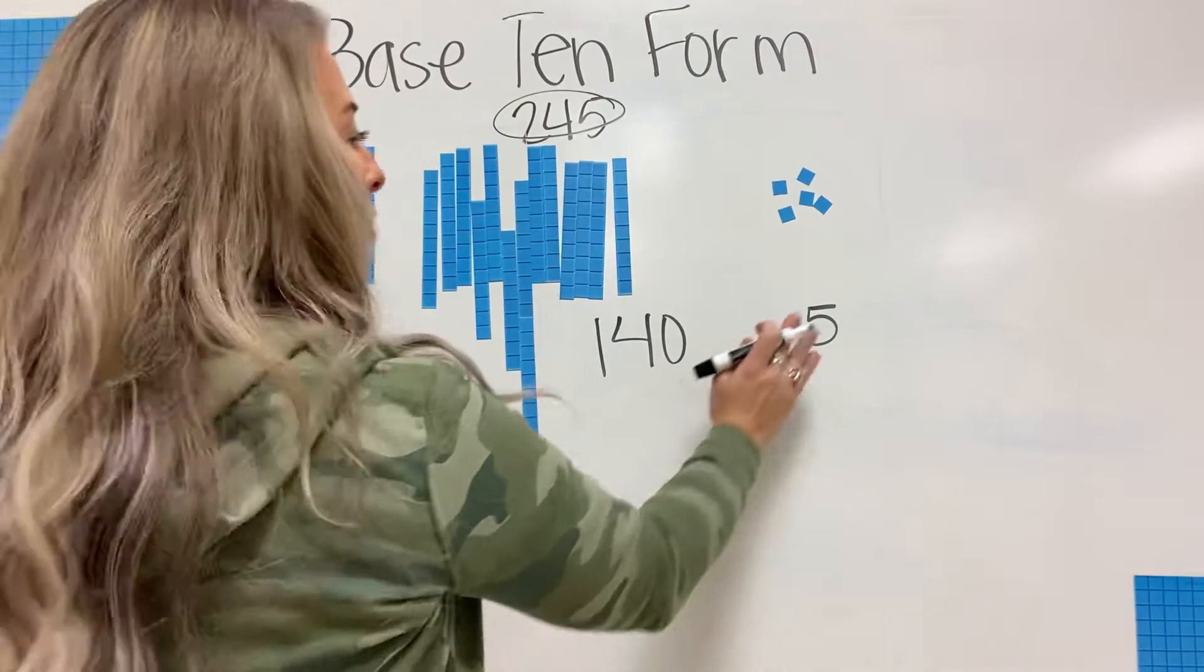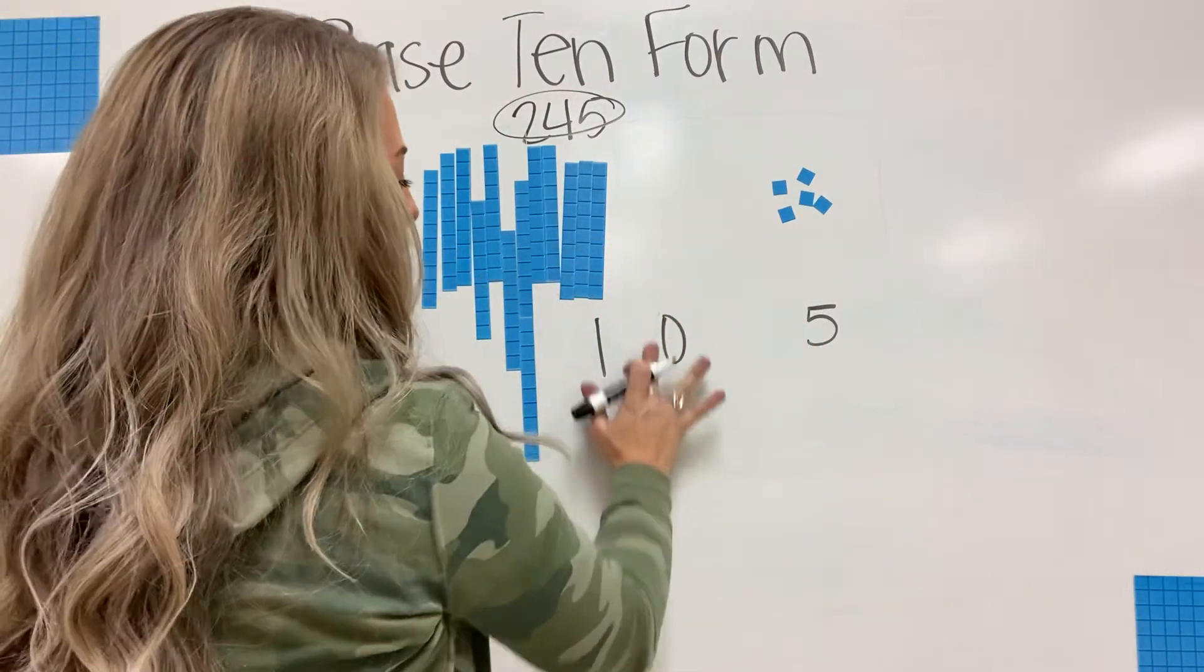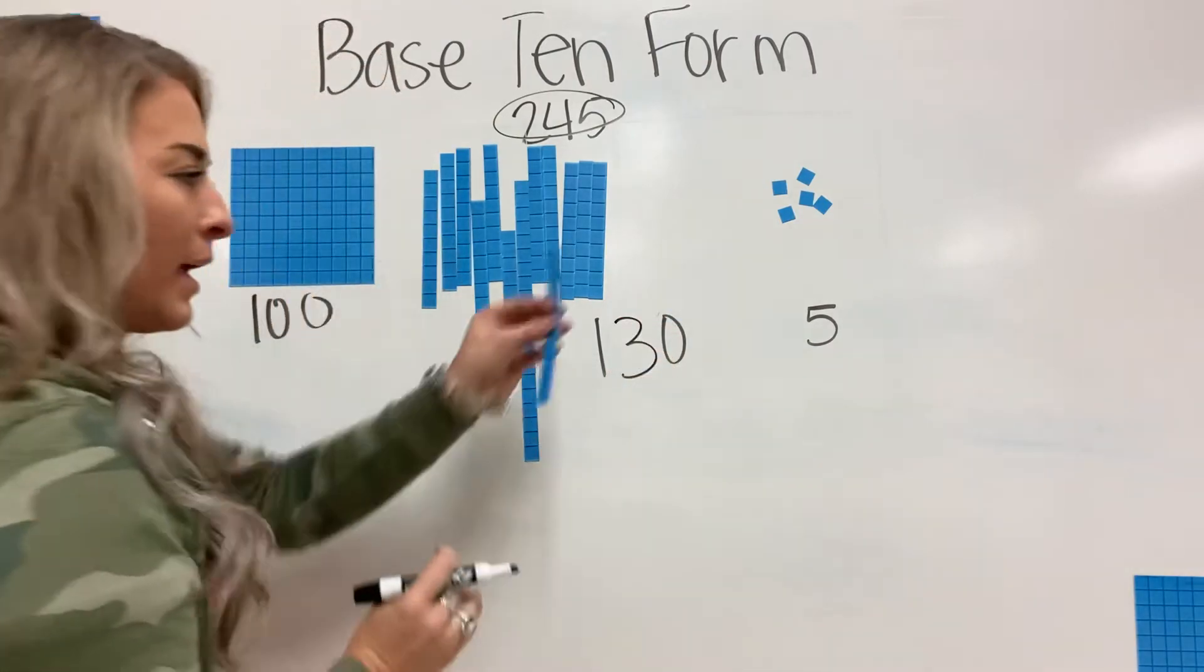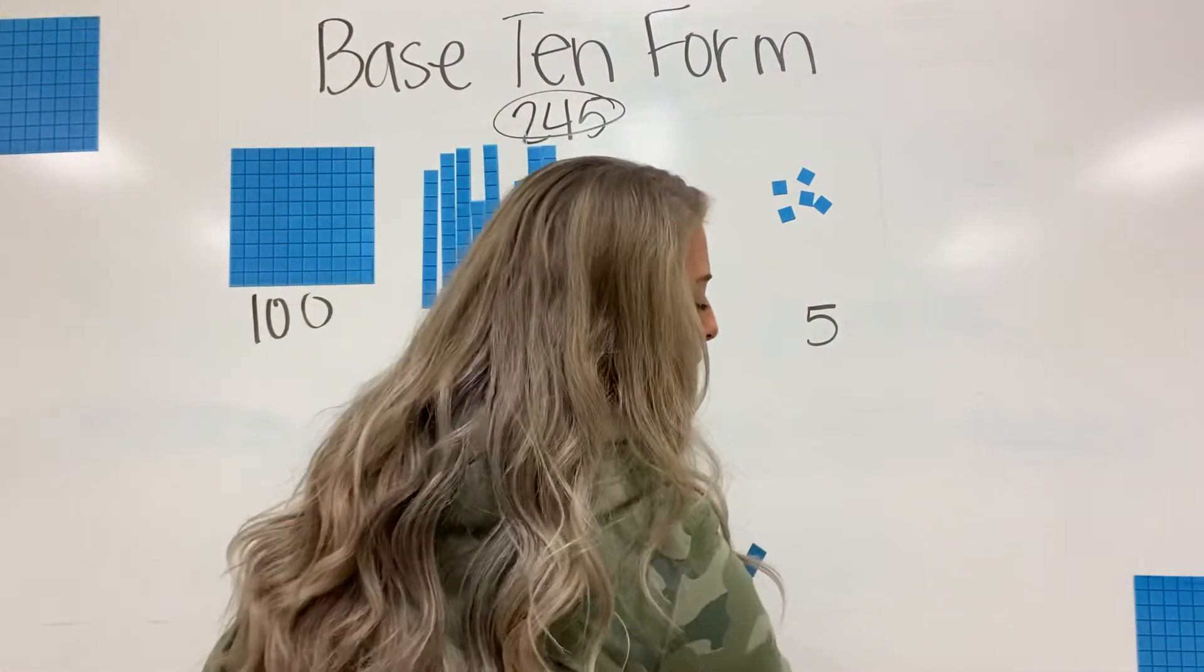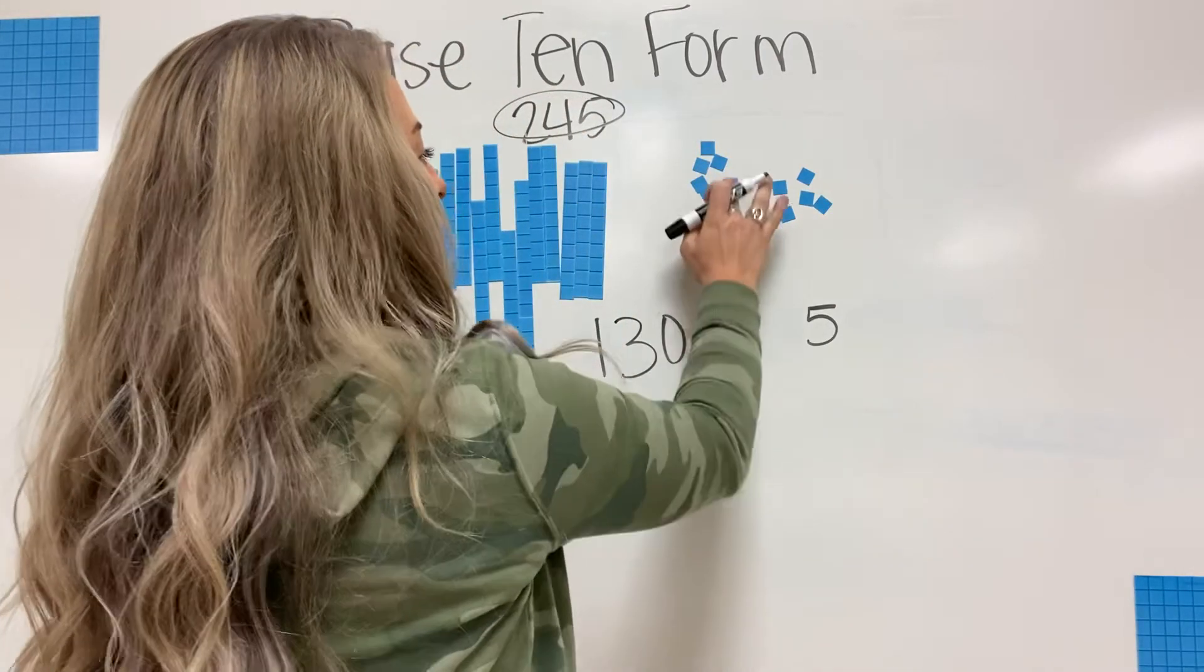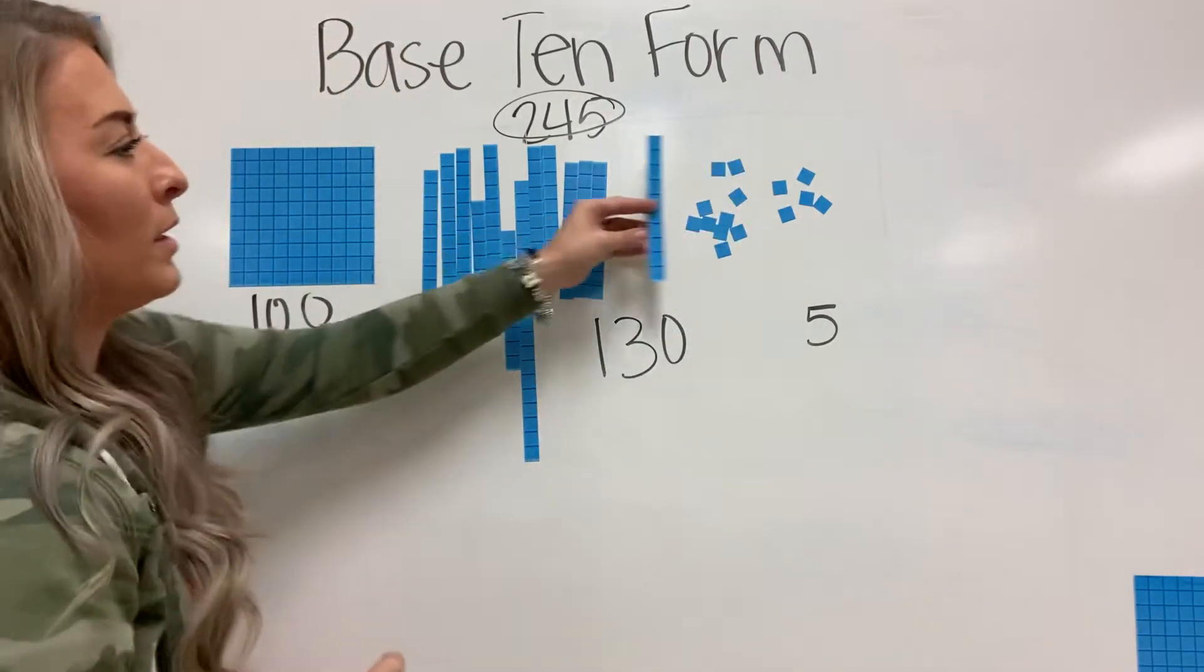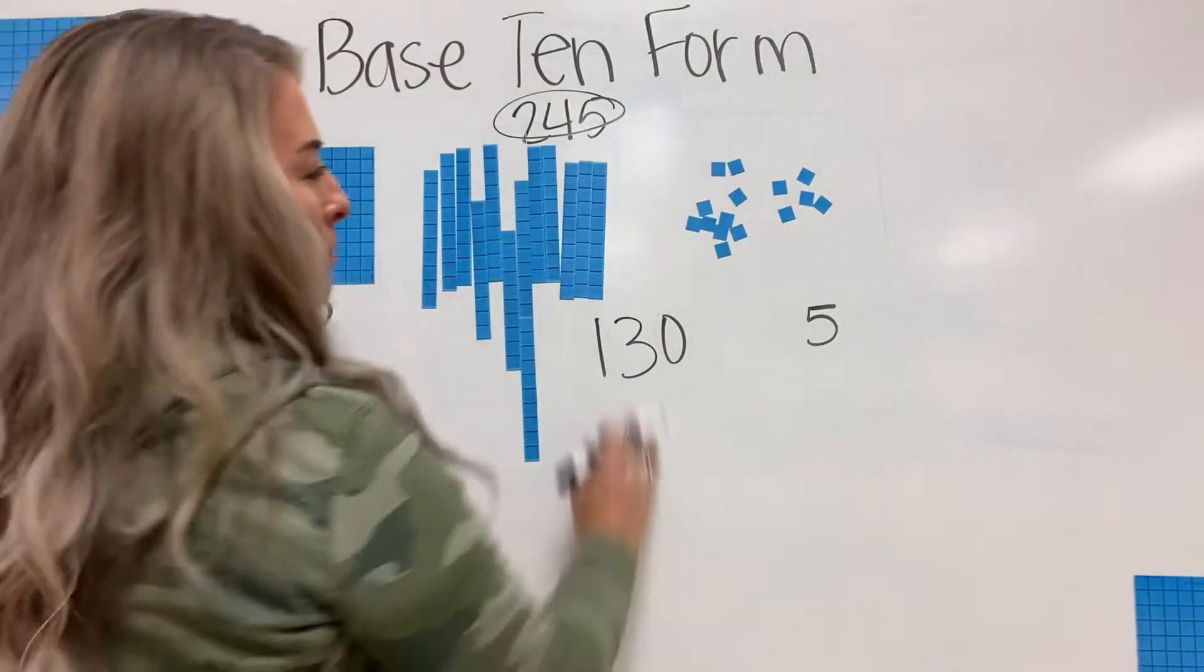You can also take one of these tens, which will leave me with 130, and I can trade it in for 10 ones, which I already counted, but I can count to show you: one, two, three, four, five, six, seven, eight, nine, 10. So I took a 10 stick out and I replaced it with 10 ones.